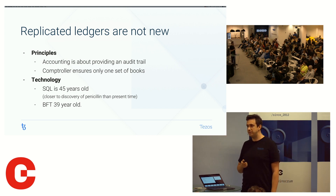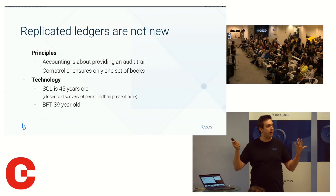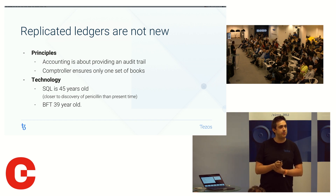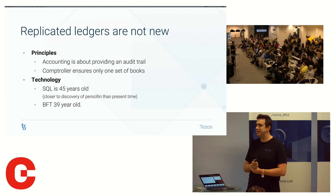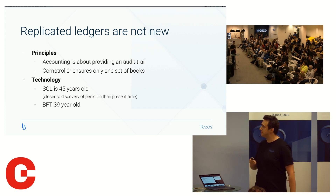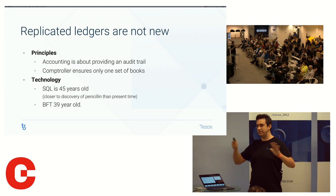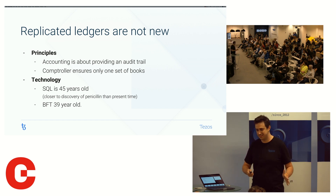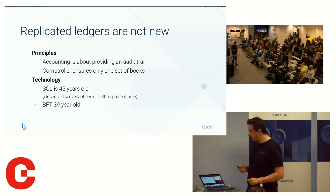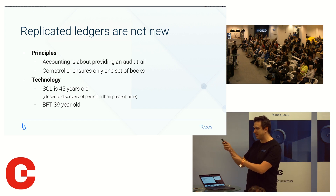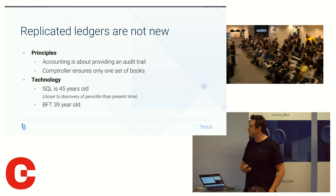Byzantine fault tolerance — the paper on the Byzantine generals is 39 years old. And there's a lore in the Bitcoin space, popular around 2013-14, that there was this Byzantine generals problem that no one could solve and finally it's been solved. No — the paper that introduced the problem introduced a solution with it. There's a solution in the paper. There are better solutions that came after, but we've had solutions for a long time.